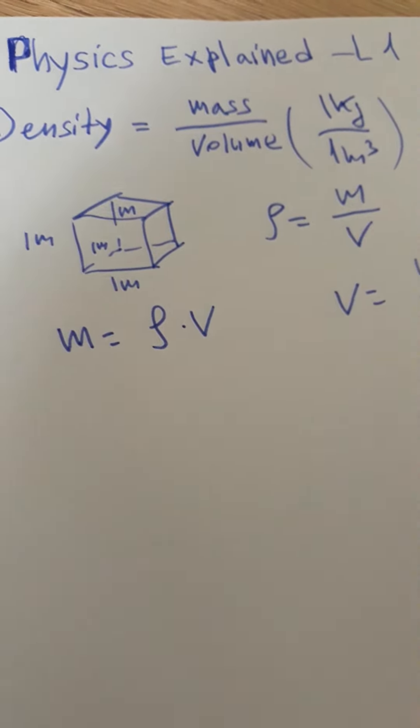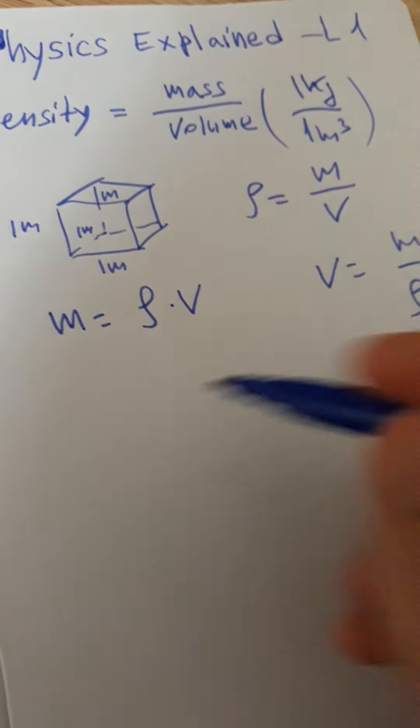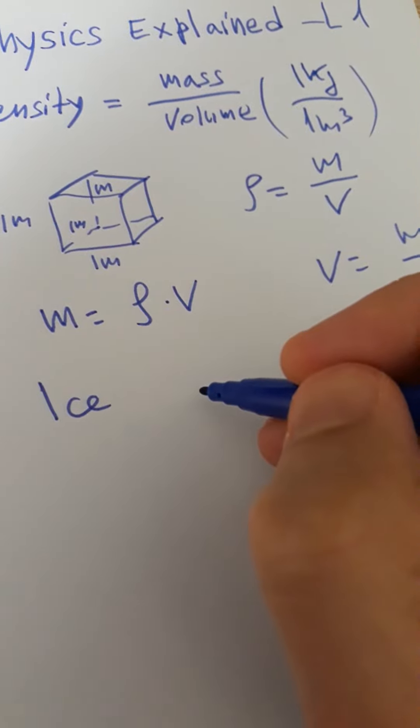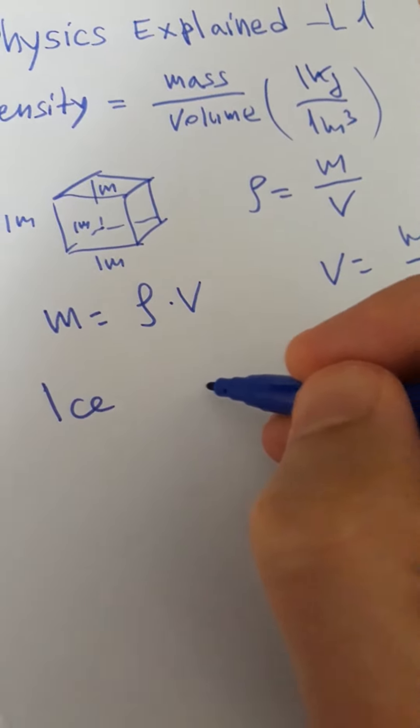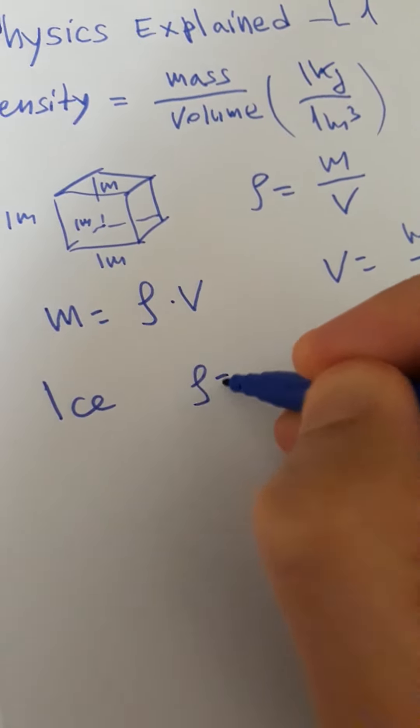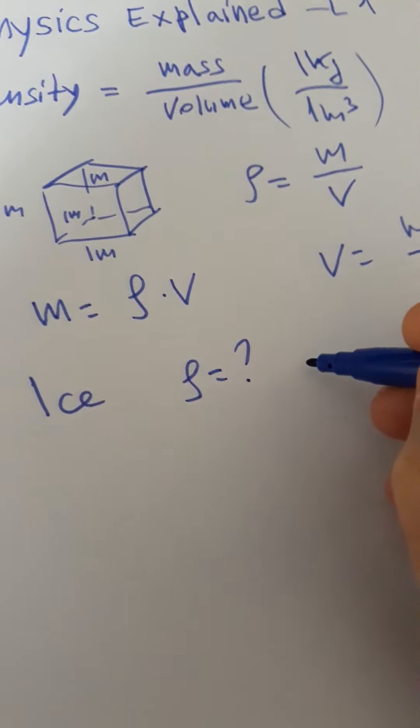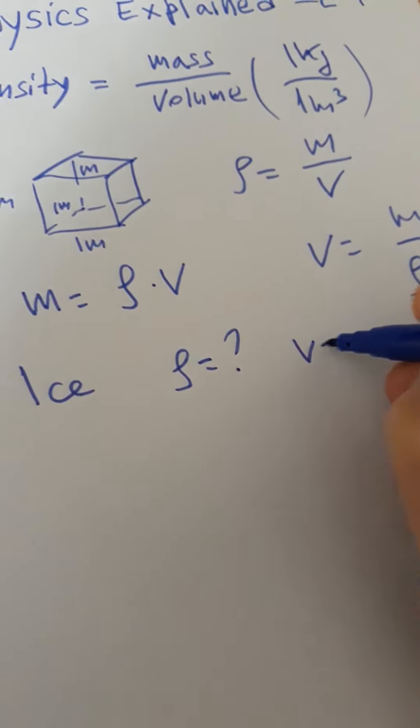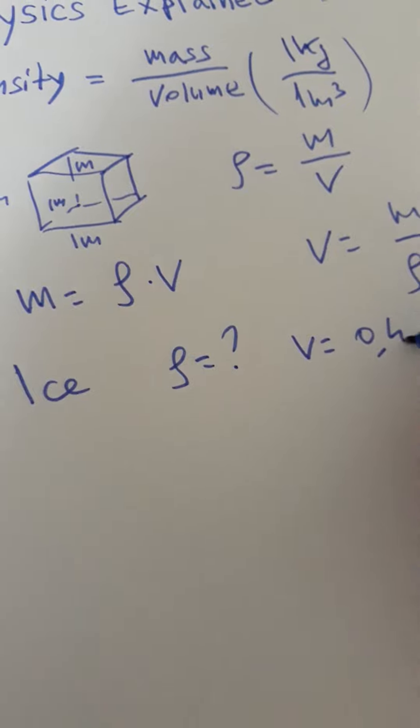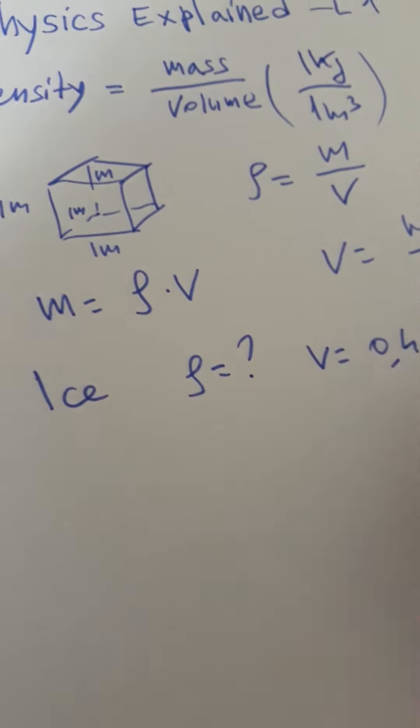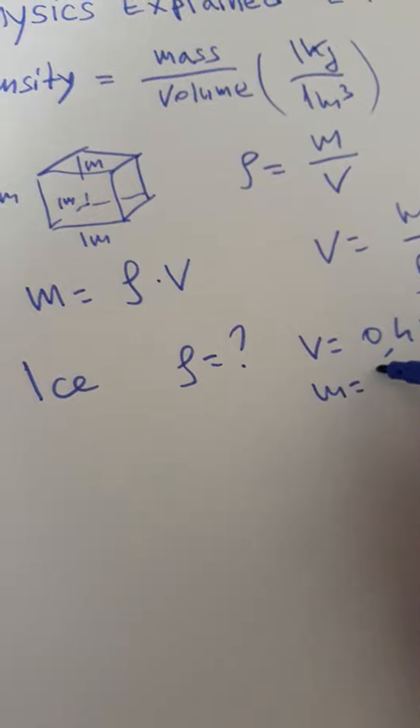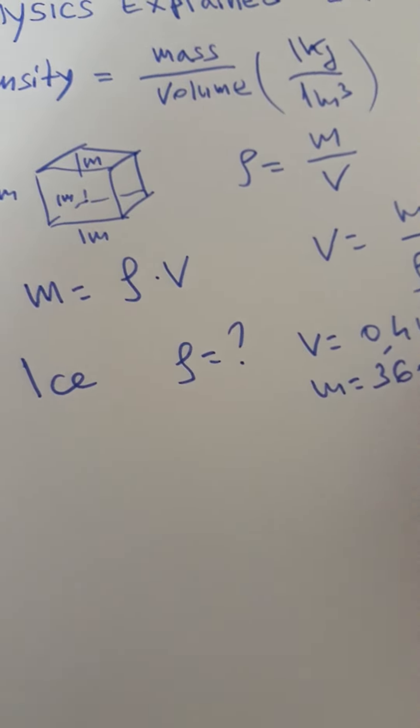Let's say that we have a piece of ice and we are looking for its density if we have volume of 0.4 meter cubics and mass of 360 kilos.